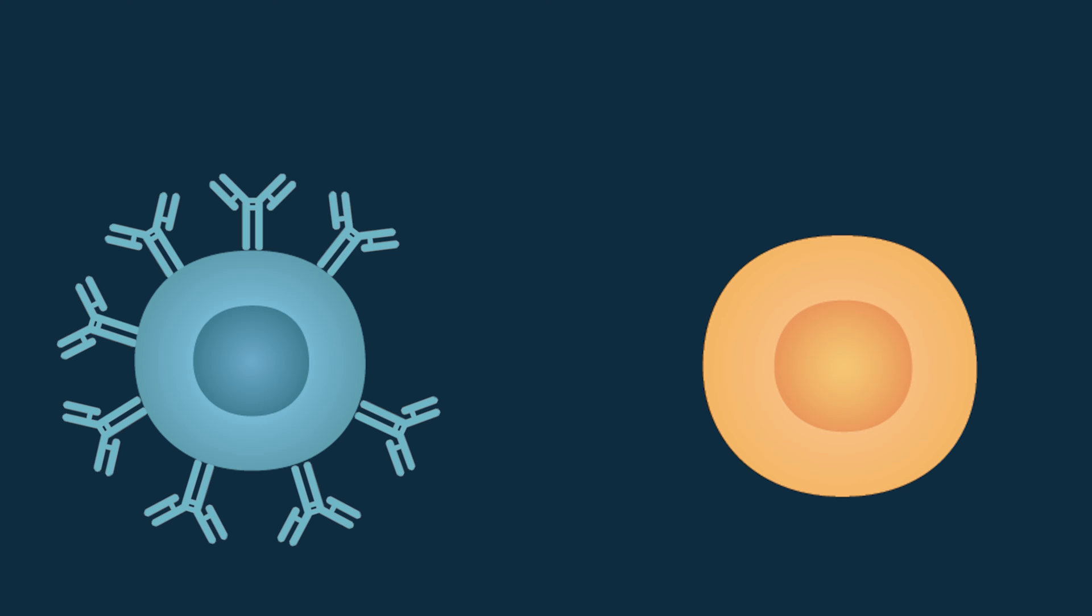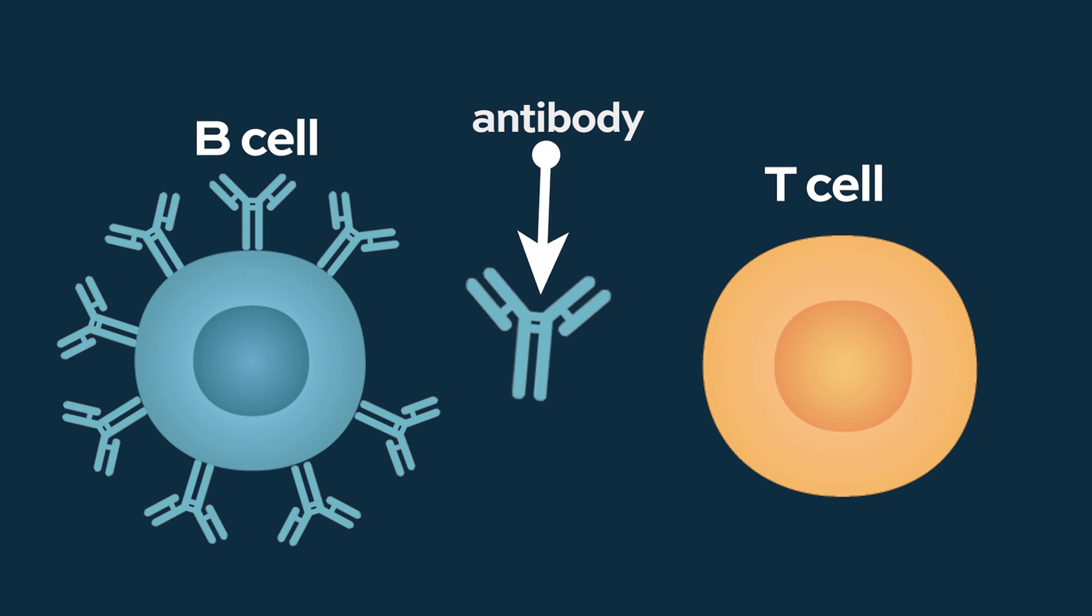So these are basically cells that on the outside have an antibody, and normally antibodies are not found on T-cells. They're only found on B-cells. So you take this antibody and it's been genetically engineered to be attached to a component on the inside of the cell.